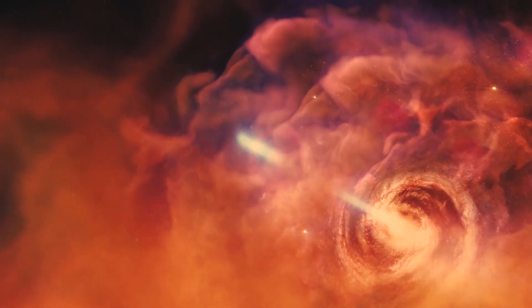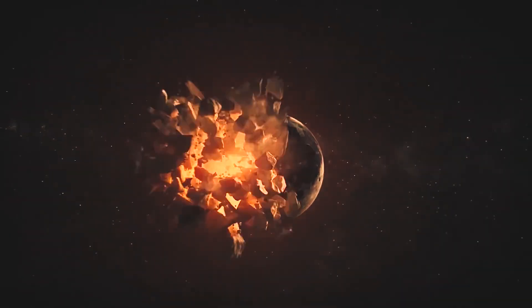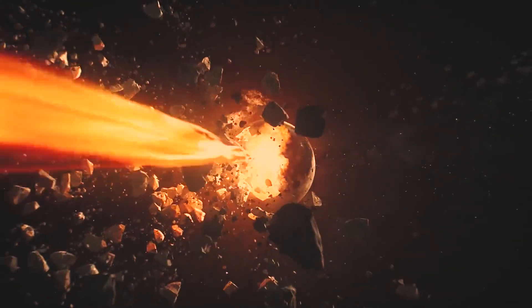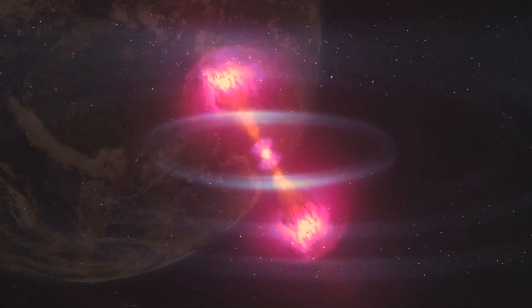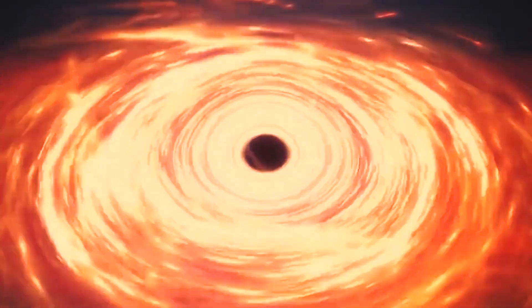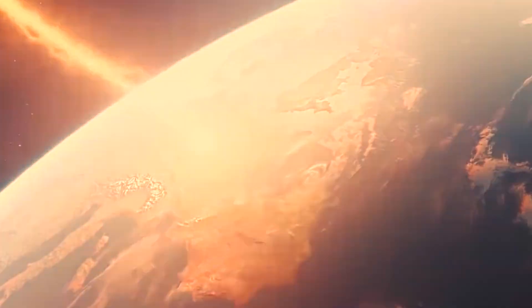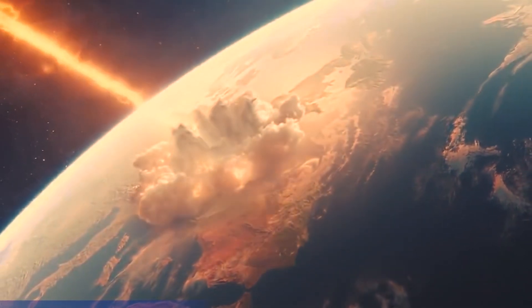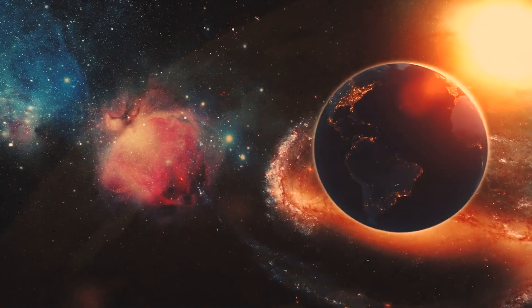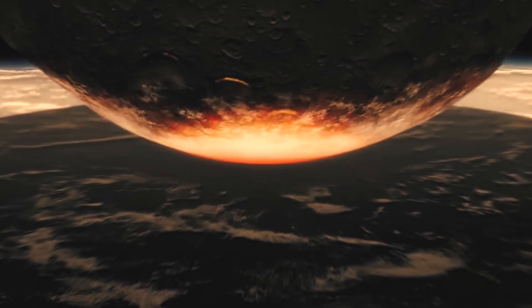To put it into context, a single gamma ray burst will release as much energy in less than a second as the Sun has throughout its 10 billion year history. Most gamma ray bursts have been recorded billions of light years away from the Earth, but it is definitely possible for the Earth to be in the impact zone of one of these bursts. So even if we're safe from all the meteors and asteroids, the gamma ray bursts might be the ones to finally get us.